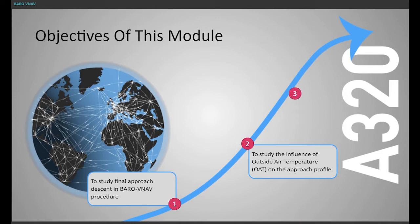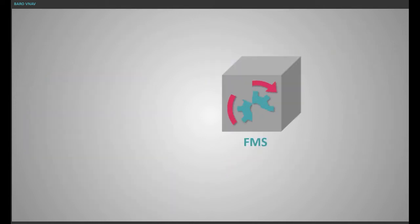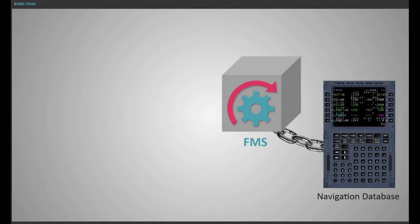and to study obstacle clearance during final approach segment. The vertical path is constructed inside the FMS, based on the procedure in the navigation database and the information from the barometric altimetry system.